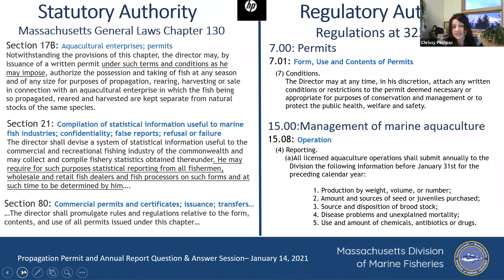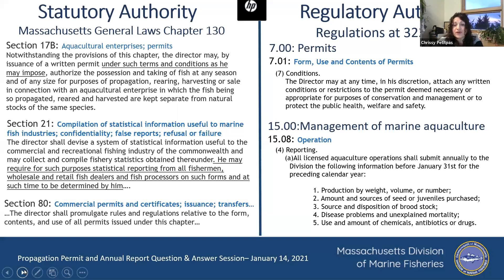In addition, Section 21 on compilation of statistics says the director may require statistical reporting from all fishermen, wholesale and retail fish dealers, and fish processors on such forms and at such times as may be determined. Sections 17B, 21, and 80 all apply. Section 80 states: the director shall promulgate rules and regulations relative to the form, contents, and use of all permits under this chapter.